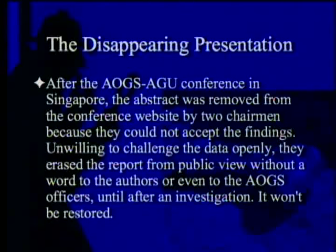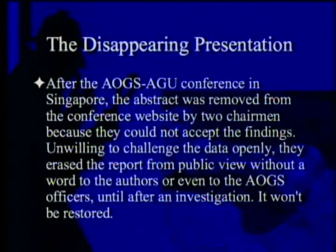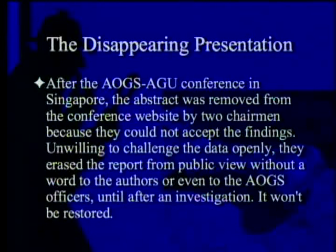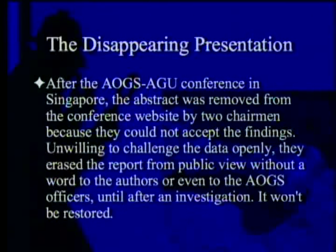Why did the paper disappear? We don't know from the people who made it disappear, but the people who made the presentation were told: 'The abstract was removed from the conference website by two chairmen because they could not accept the findings.' They were unwilling to challenge the data openly; they erased the report from public view. That much is a fact. This was done without a word to the authors or even to the AOGS officers until after an investigation, and the comment was that it won't be restored.